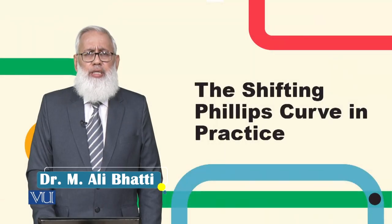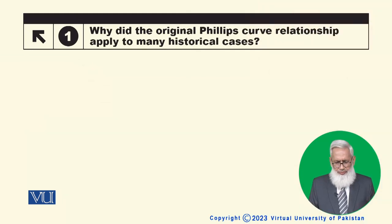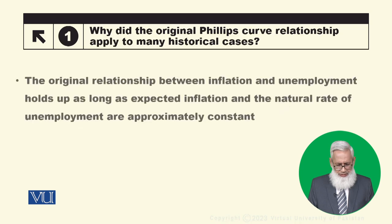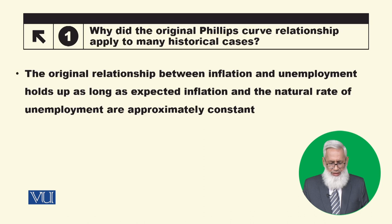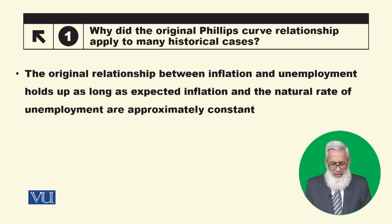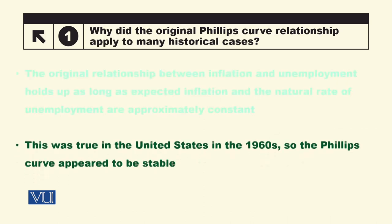The Shifting Phillips Curve in Practice: Why did the original Phillips Curve relationship apply to many historical cases? The original negative relationship between inflation and unemployment holds up as long as expected inflation and the natural rate of unemployment are approximately constant. This was true in the United States in the 1960s, so the Phillips Curve appeared to be stable.